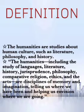The humanities tell us where we have been and help us envision where we are going. The sub-branches of humanities include language, literature, history, jurisprudence, philosophy, comparative religion, ethics, and the arts. Humanities and social science are interrelated — for example, history is included in both social science and humanities.